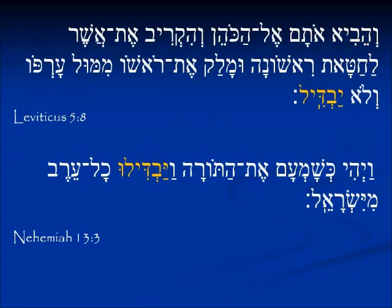In the third person singular, Leviticus 5:8, this is talking about when small birds are involved in the sacrifice and how you wring off the head, but they are commanded not to divide the body, not to separate the body. We see that part of the command at the end of the verse: lo yavdil — the priest will not divide it.